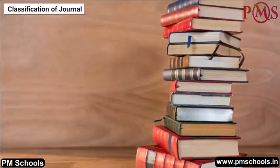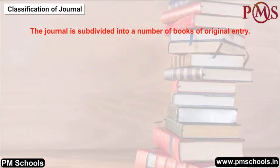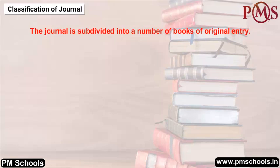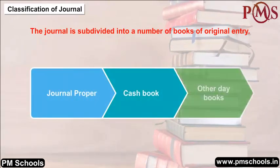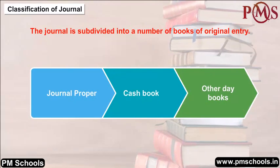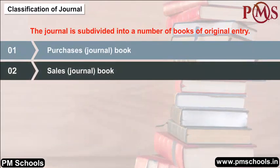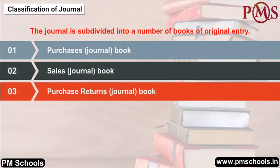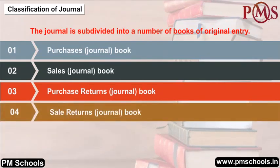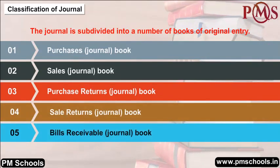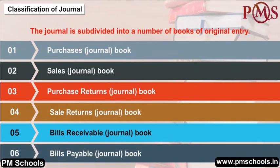Classification of Journal: The journal is subdivided into a number of books of original entry. These are: A) Journal Proper, B) Cash Book, and C) Other Day Books, including: Purchases Journal Book, Sales Journal Book, Purchase Returns Journal Book, Sales Returns Journal Book, Bills Receivable Journal Book, and Bills Payable Journal Book.